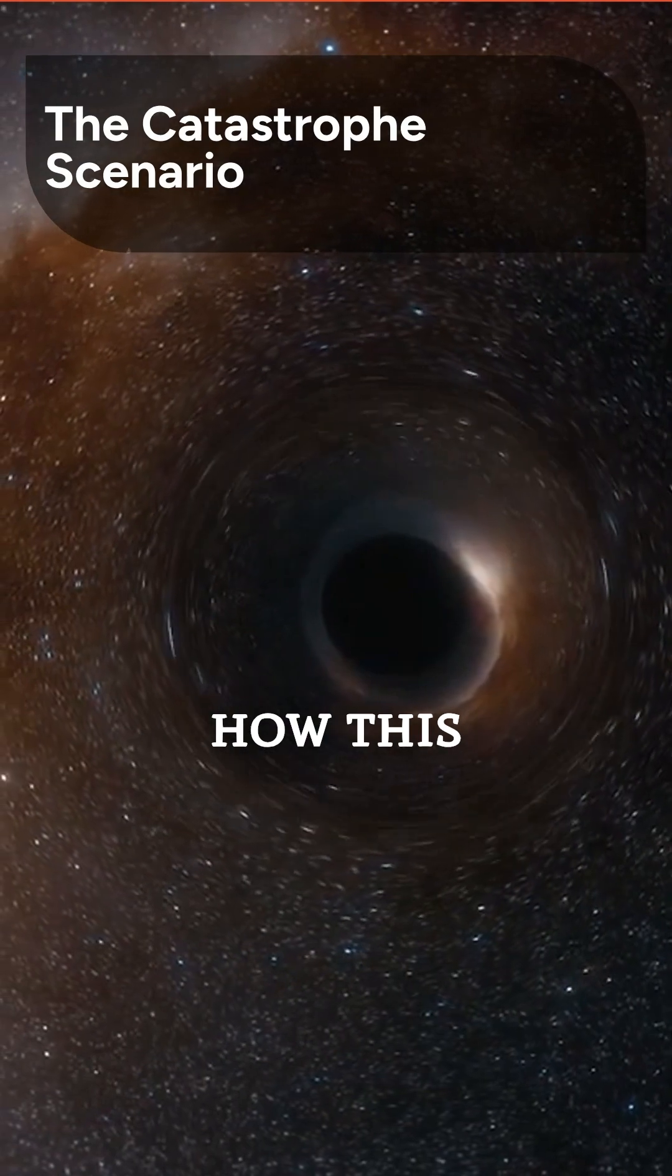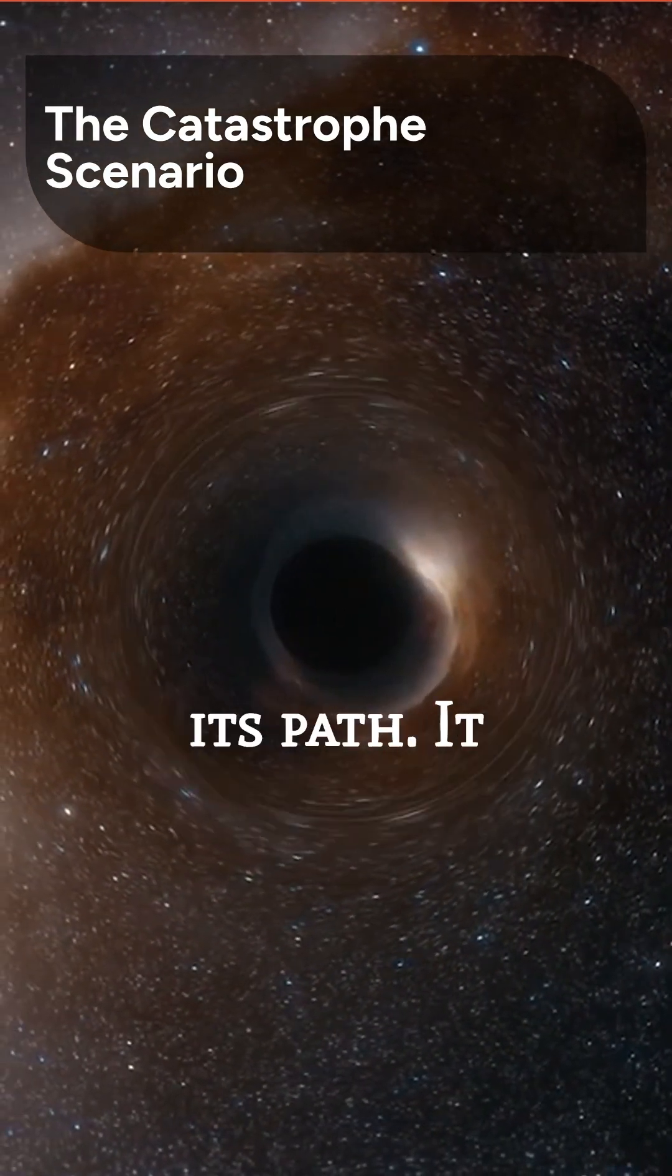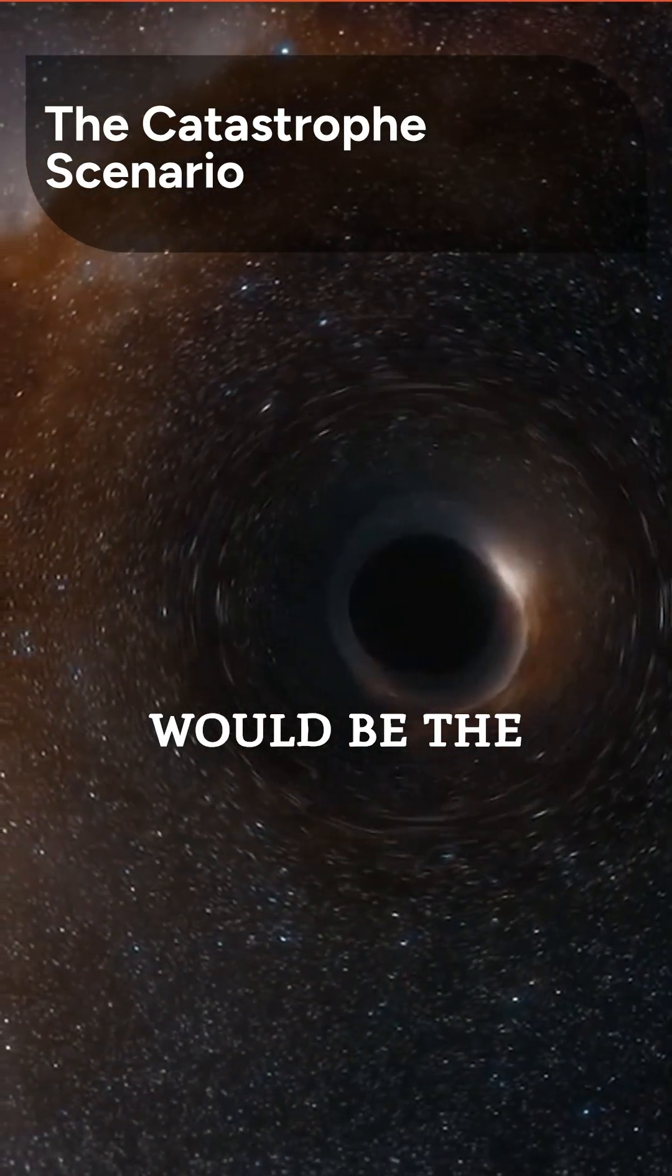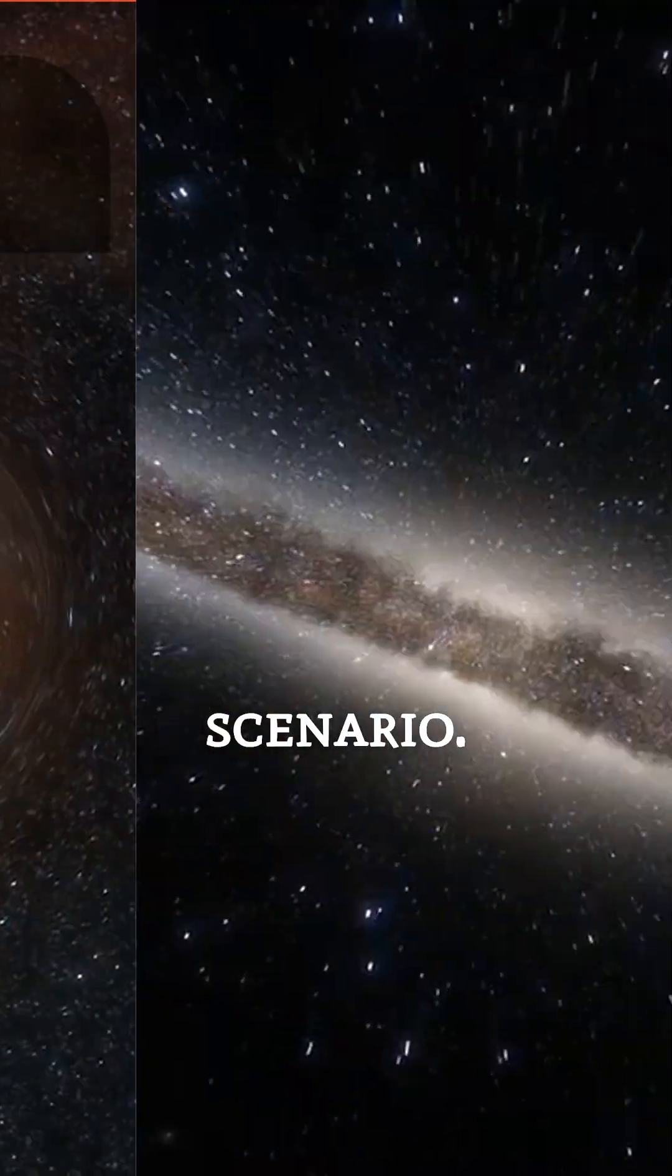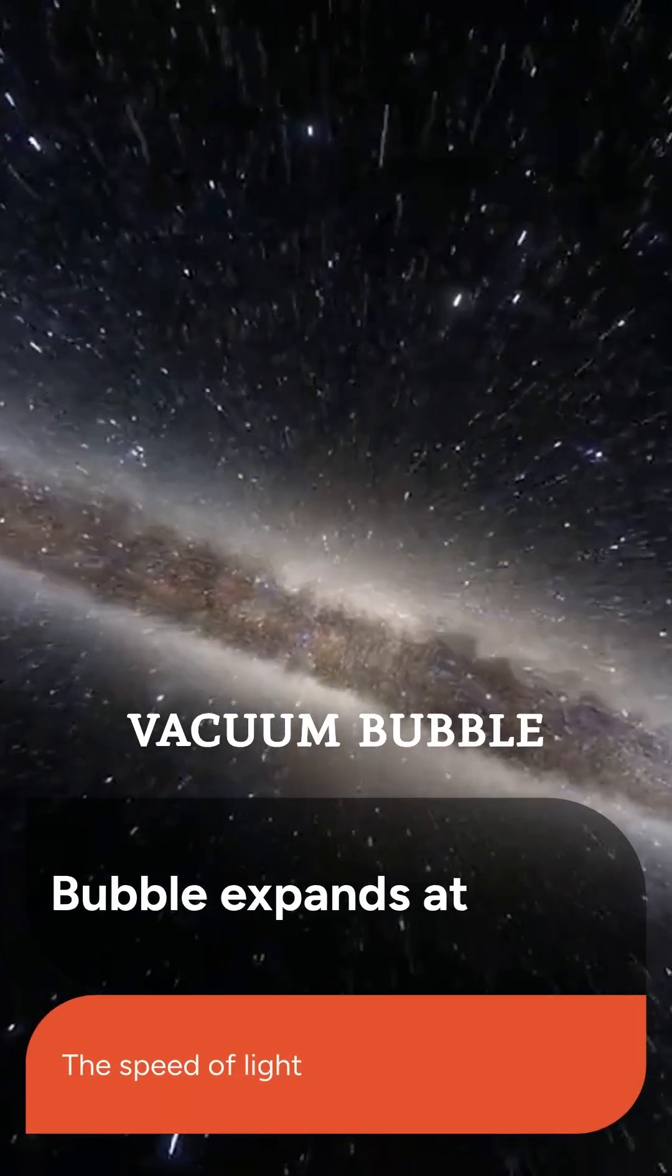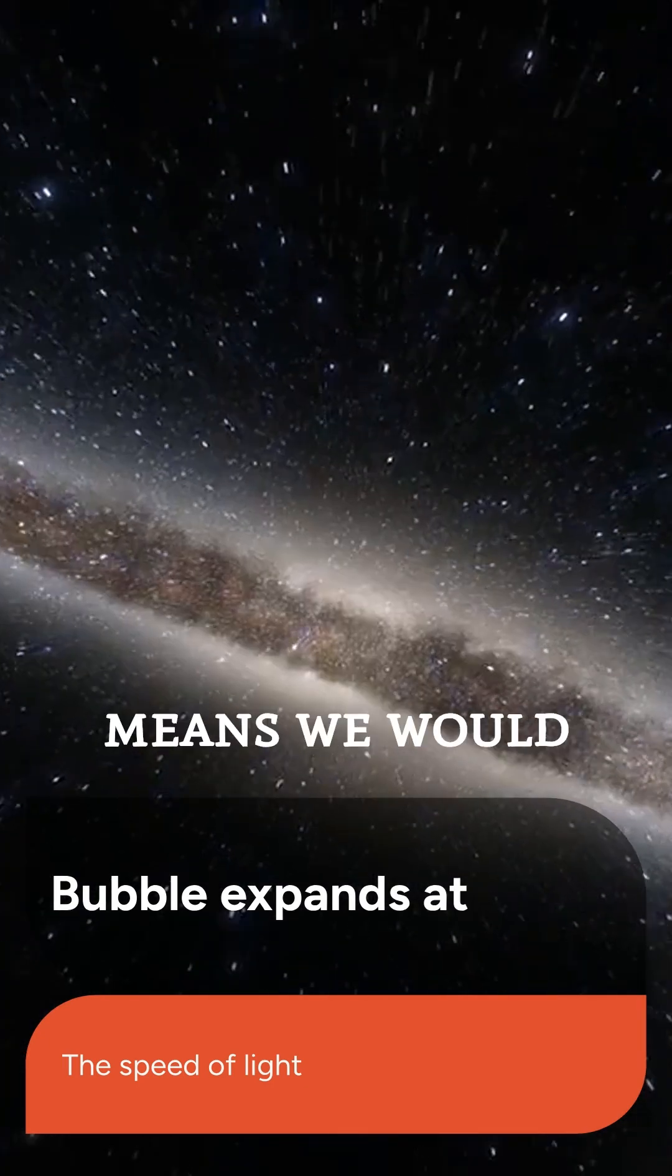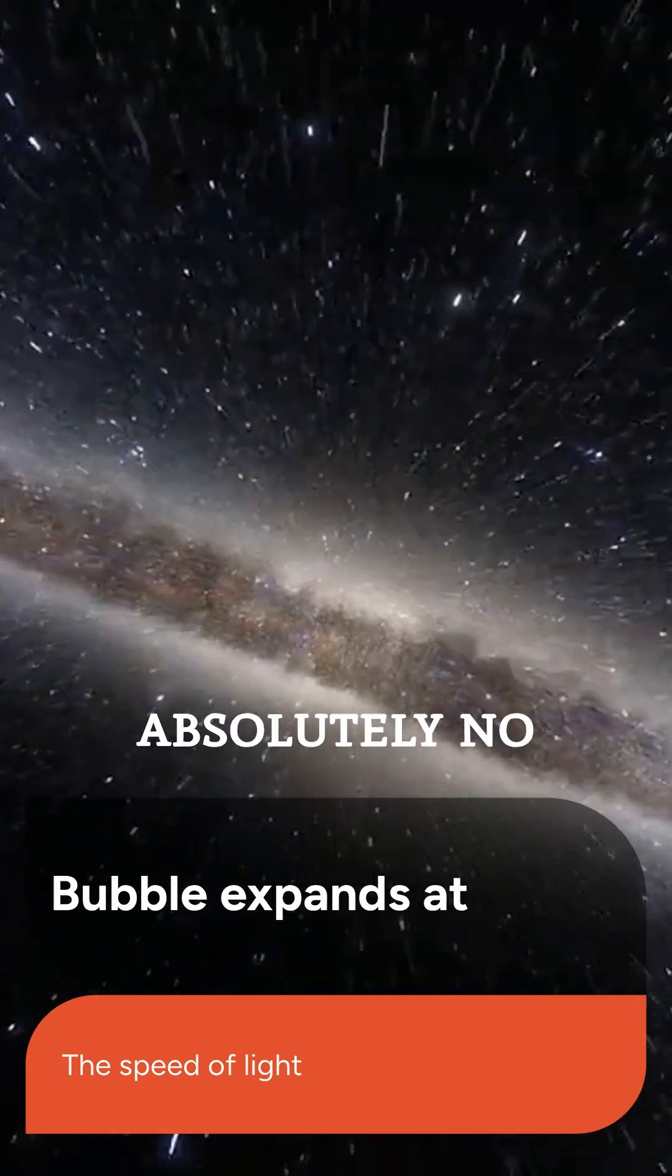The catastrophe is how this bubble expands, altering everything in its path. It would be the ultimate end-of-the-universe scenario. Crucially, this true vacuum bubble expands outward at the speed of light. This means we would have absolutely no warning before it arrived.